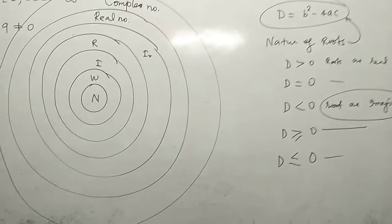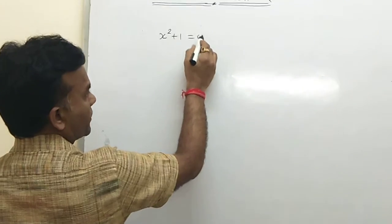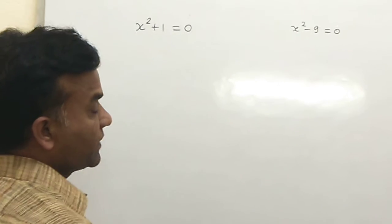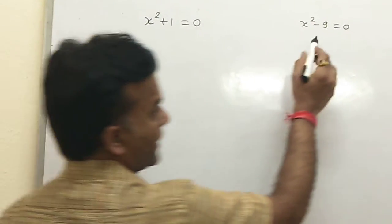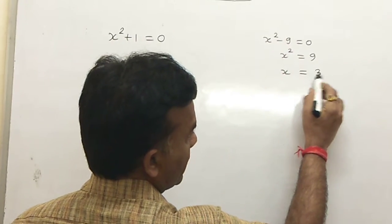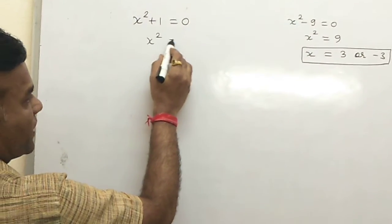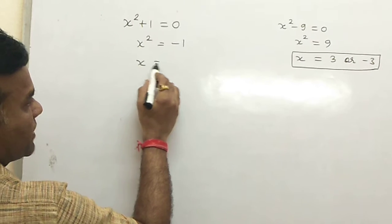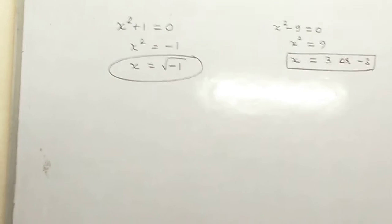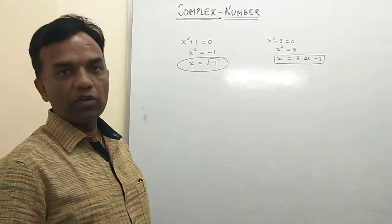Consider the quadratic equation x² + 1 = 0, and compare it with x² − 9 = 0. For x² − 9 = 0, we get x² = 9, so x = 3 or −3. But for x² + 1 = 0, we get x² = −1, so x = √(−1). This is not solvable in the reals because the inside value is negative, meaning D < 0 and roots are not real.